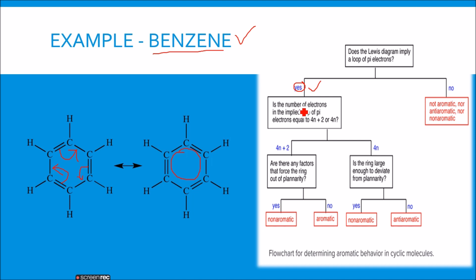You ask the next question: is the number of electrons in the implied loop of pi electrons equal to 4n plus 2 or 4n? In benzene, you have 6 pi electrons. You have 3 pi bonds with 6 pi electrons. It's 4 into 1 plus 2. It obeys the 4n plus 2 rule. So the answer is 4n plus 2.